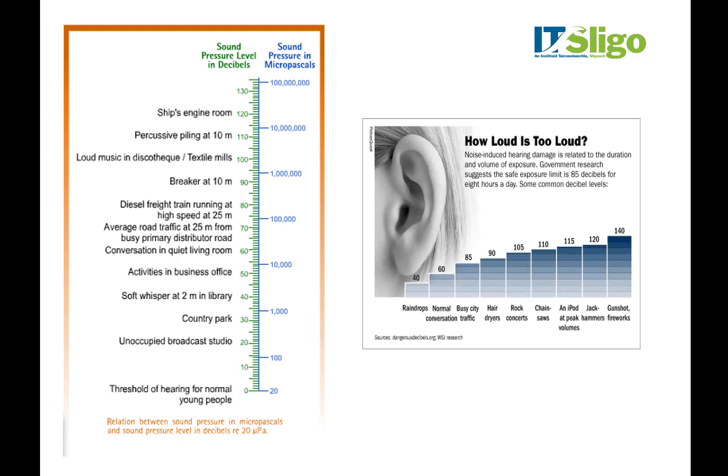At 140 decibels, physical pain starts to occur, permanent ear damage can occur, and you can burst your eardrum. 40 decibels is fairly average noise — even walking in the countryside you would easily experience a noise level of 40 decibels. Achieving zero decibels is very difficult; you'd have to go into a sensory deprivation kind of chamber to even get close.